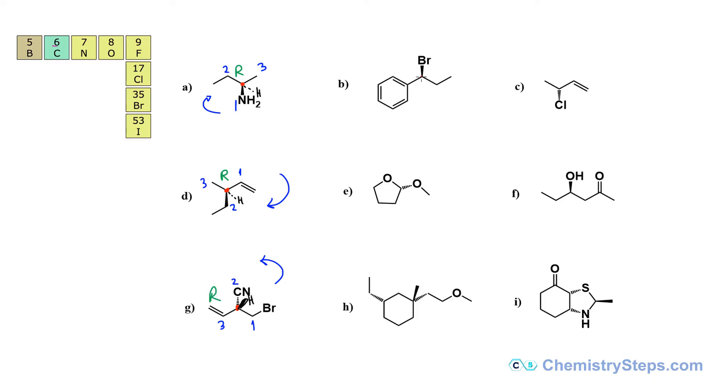On the next molecule, we have the chiral center. Br gets number one, here this is a carbon connected to three carbons, because two here, so double bond we counted as two, one on the bottom, here's a carbon connected to only one carbon and two hydrogen, so this is number two, number three, H pointing away.